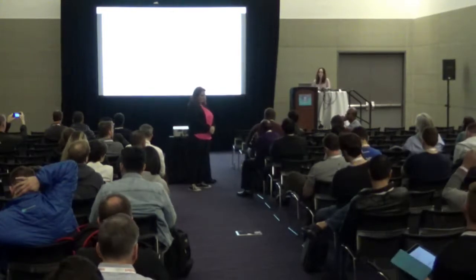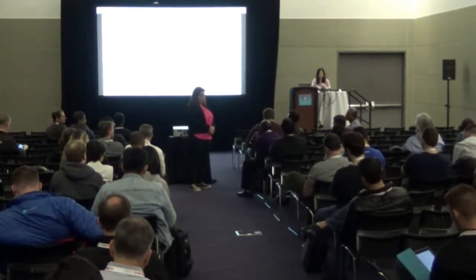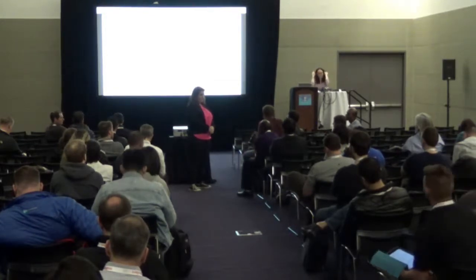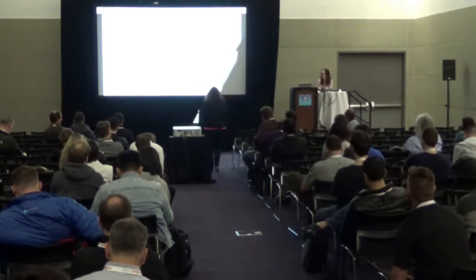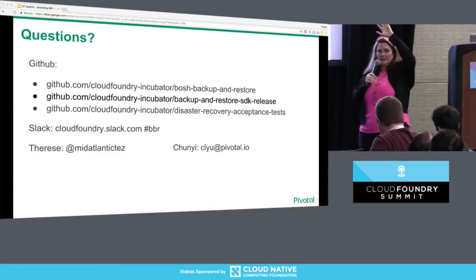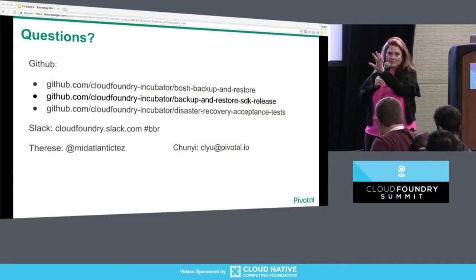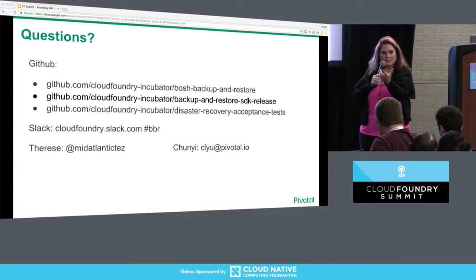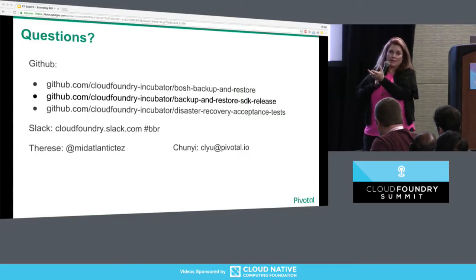Q: About artifact validation — is the purpose to check whether the restore worked properly, or to check the integrity of the backup? A: Both of those things are the same. What I would do is, at the end of a Concourse pipeline, add a step that uses the validate artifact command to take the backup artifact just created, run it through verify, and you have confidence that the backup artifact will work in case of a disaster. Operators we've talked to run a restore maybe once a month or once a year, but this means that with every single backup you can have confidence that it will work.